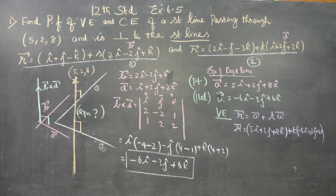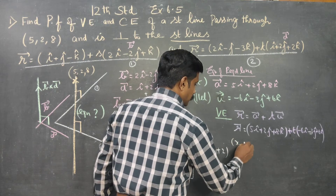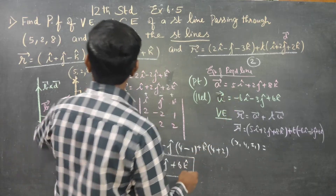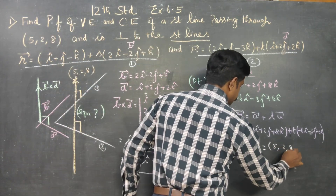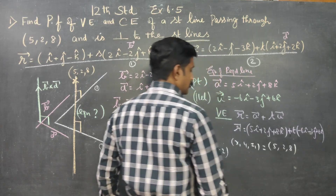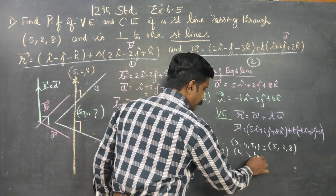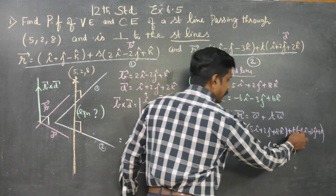The vector equation is complete. After finding the vector equation, you have to find the Cartesian equation. For the Cartesian equation, X1, Y1, Z1 is my first point — which is (5, 2, 8). Then B1, B2, B3 are taken from the parallel direction vector.